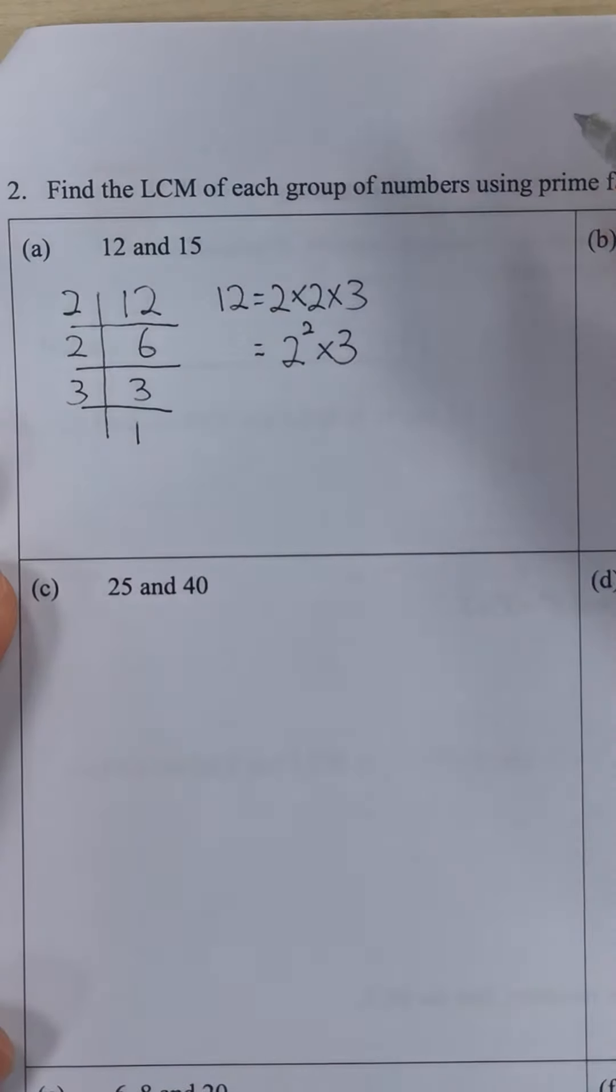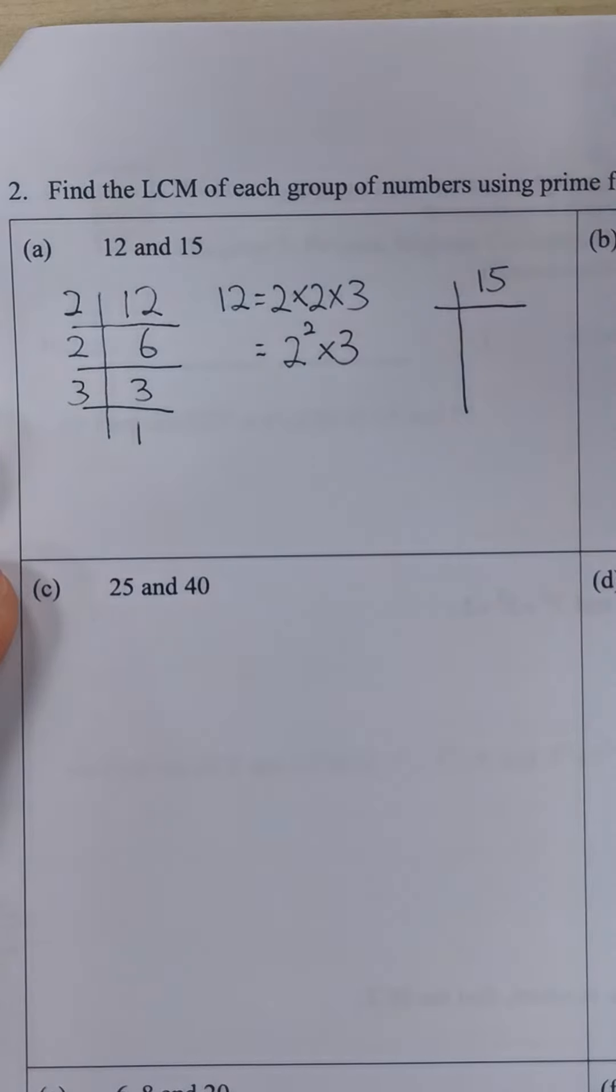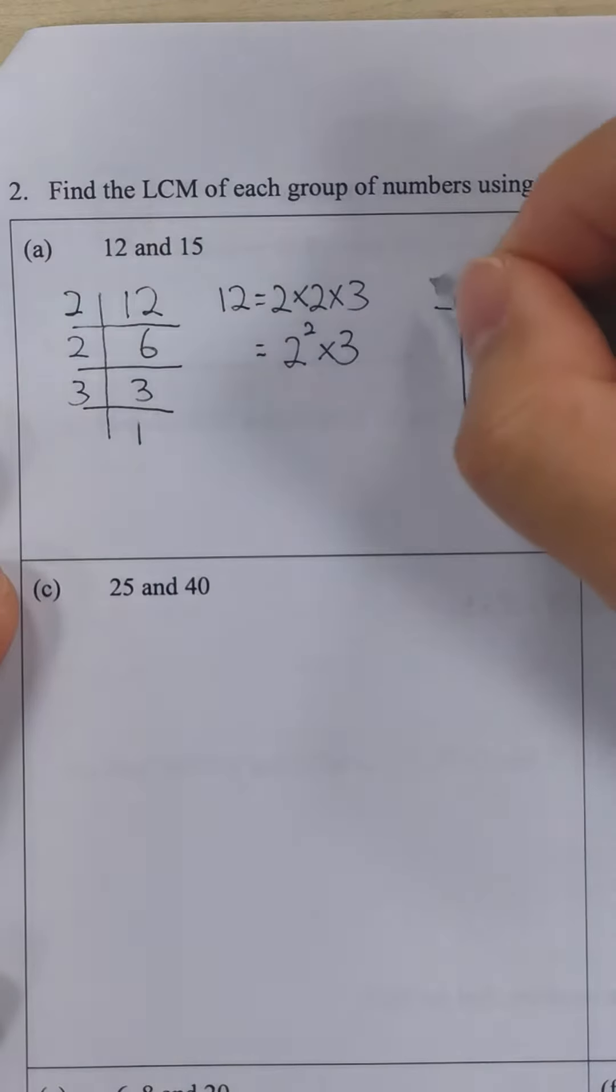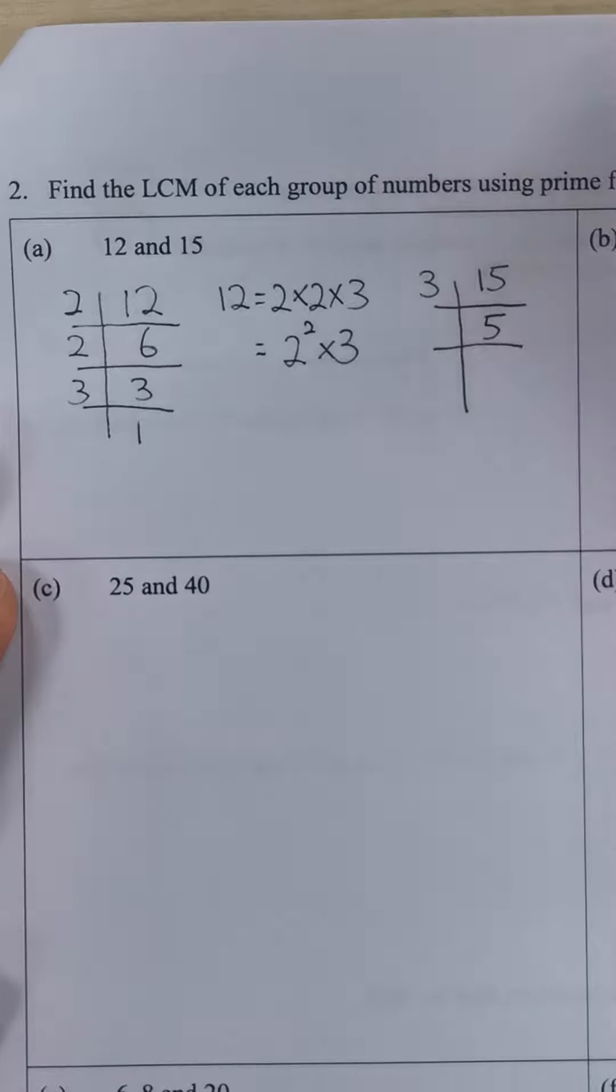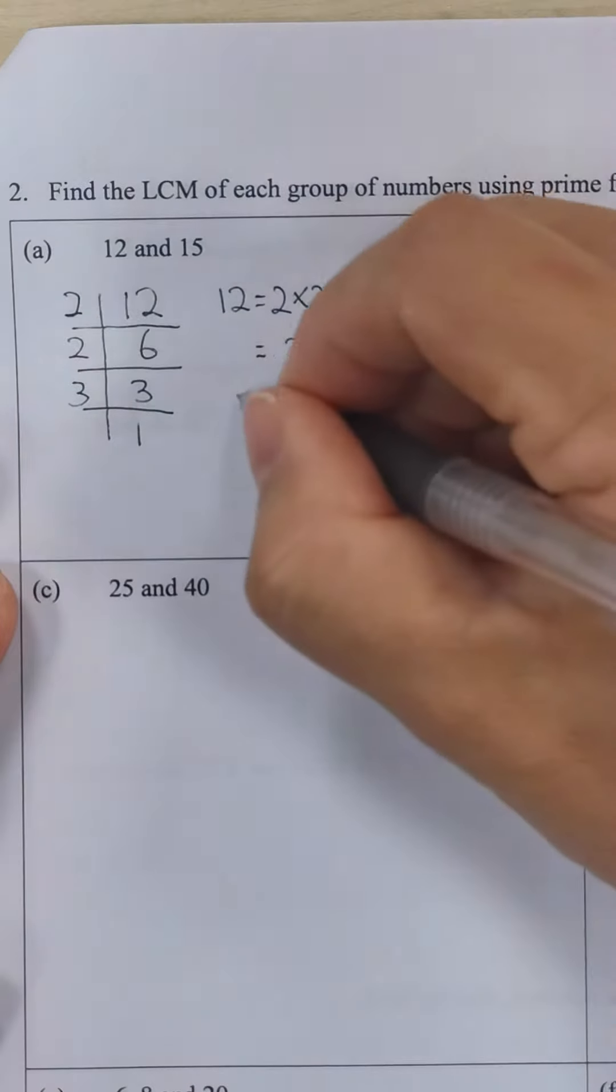Similarly for 15. 15 is an odd number, we cannot divide by 2, so the next smallest prime factor will be 3. We have 5. 5 divided by 5, we have 1. So 15 can be written as 3 times 5.